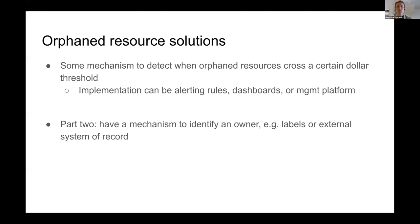The solution is to have a mechanism to detect when orphaned resources cross a certain cost threshold, with a notification system tied to a hierarchy of ownership — so if something is sitting in a namespace, not being used, and exceeding a certain amount, someone gets alerted and can come loop around. The solution is really just: delete the resource and stop paying for it. It revolves around identifying an owner and communicating to that owner that they should check it out and probably delete it.